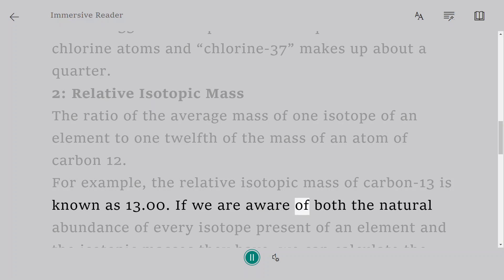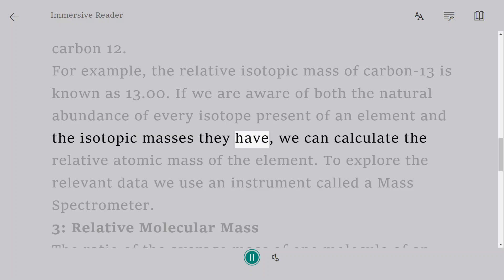If we are aware of both the natural abundance of every isotope present of an element and the isotopic masses they have, we can calculate the relative atomic mass of the element. To explore the relevant data we use an instrument called a mass spectrometer.